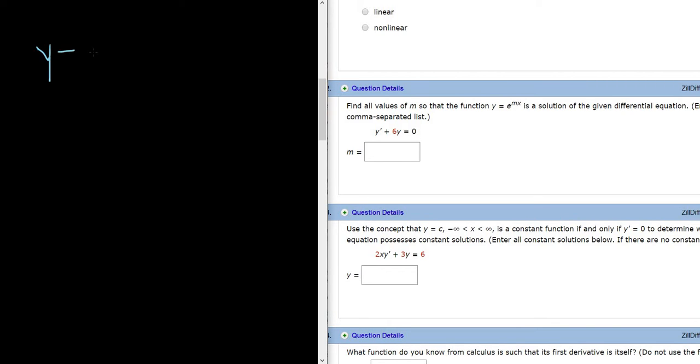So y equals e to the mx, and the question is to find m so that it's a solution to this differential equation. The differential equation is y prime plus 6y equals 0.